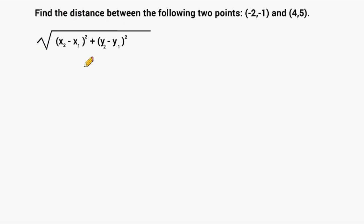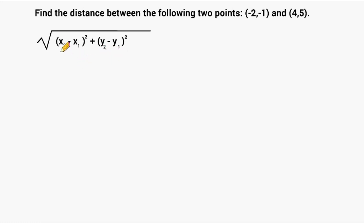Looking at the distance formula, we can see that we have two x's inside the first set of parentheses and two y's inside the second set of parentheses. They read x sub 2 and x sub 1, and y sub 2 and y sub 1. That means we're going to take our second x value and subtract from it the first x value, take that difference and square it, and do the same thing with the two y values.